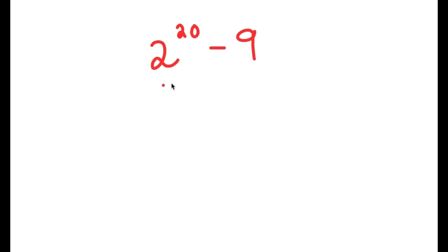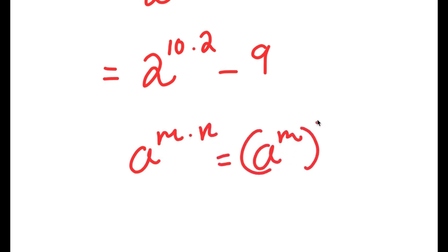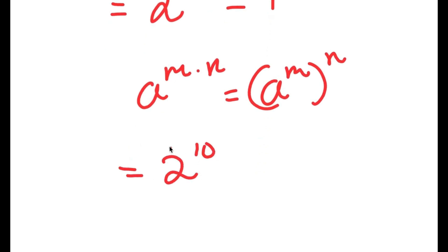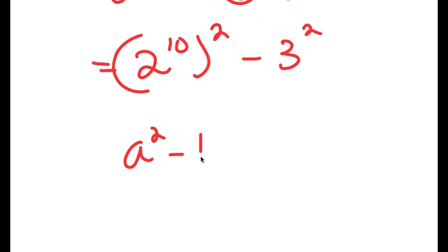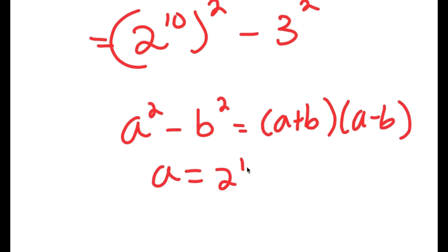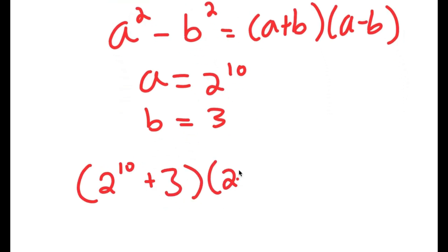In this problem, I have 2 to the power of 20 minus 9, and I want to find the answer. I'm going to start by rewriting 2 to the power of 20 as 2 to the power of 10 times 2. Using the property that a to the power of m times n equals a to the power of m to the power of n, this becomes 2 to the power of 10, all squared, minus 9, which is the same as 3 squared. Using the difference of squares — a squared minus b squared equals a plus b times a minus b — where a is 2 to the power of 10 and b is 3, I get 2 to the power of 10 plus 3 times 2 to the power of 10 minus 3.